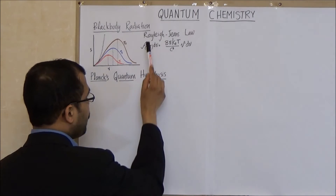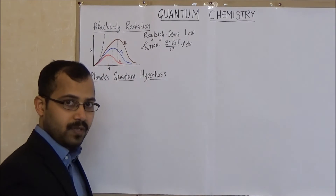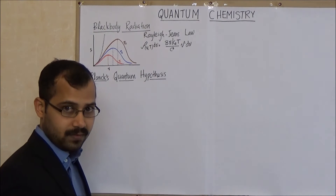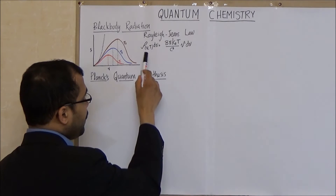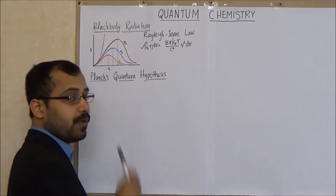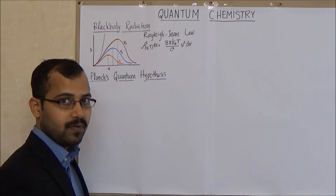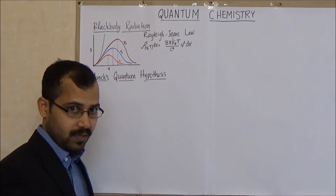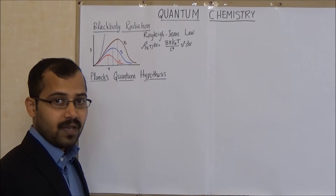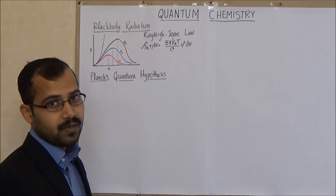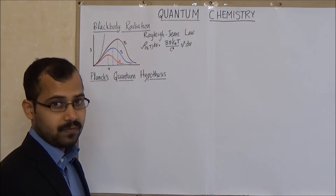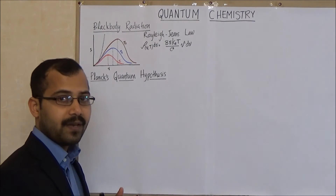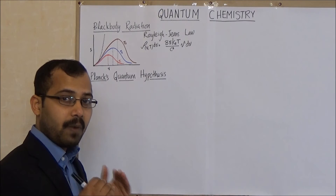We also saw the Rayleigh-Jeans law, which was derived based on the principles of classical mechanics. But Rayleigh-Jeans law was not able to explain black body radiation completely. We saw that the expression diverges as ν² at higher frequencies, and this phenomenon was called ultraviolet catastrophe.